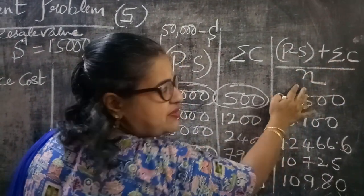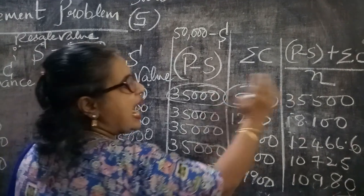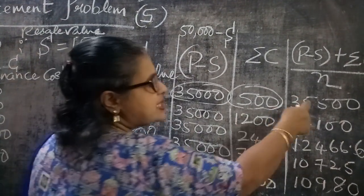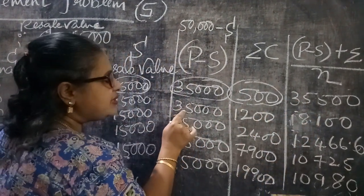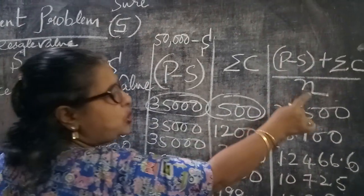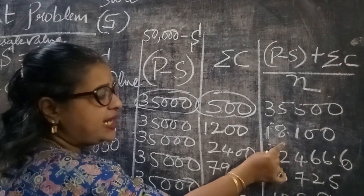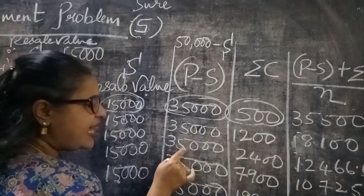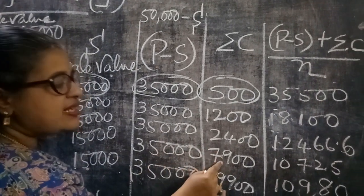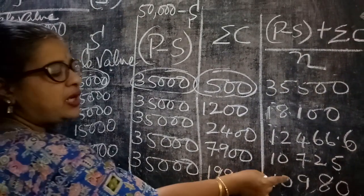Now coming to the last column: (P minus S) plus summation C, divided by N. For the first year, you take P minus S which is 35,000, plus summation C of 500, both divided by N equals 1. For the second year, it is 35,000 plus 1,200 divided by N equals 2. Then for subsequent years, divide by 3, then by 4, then by 5 respectively.